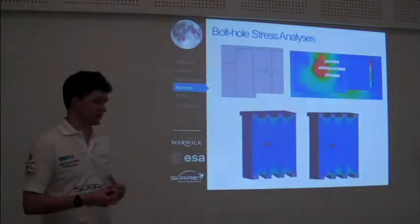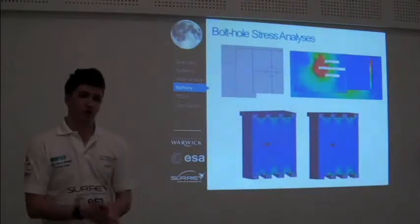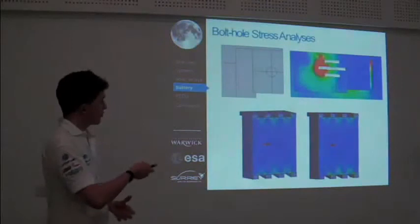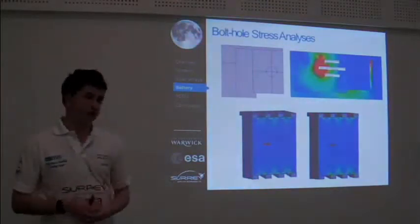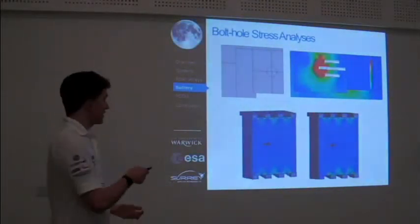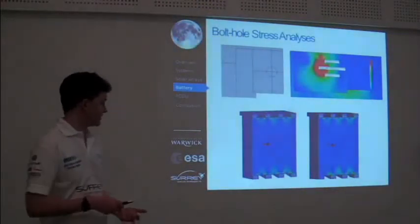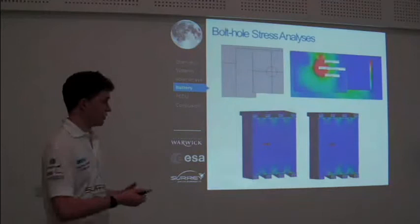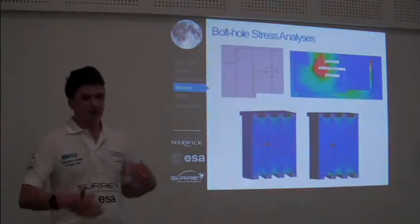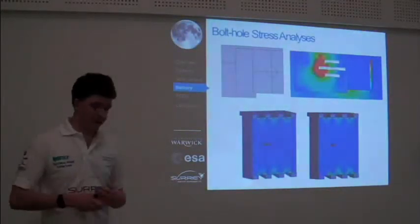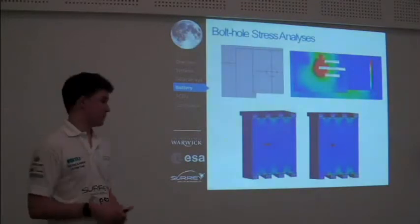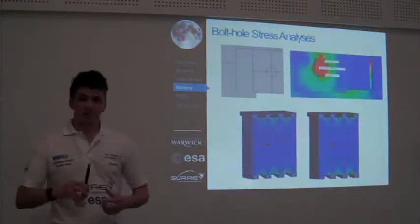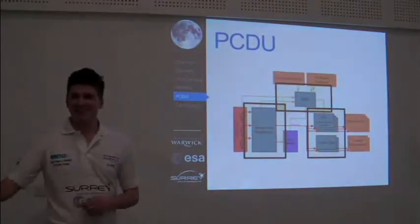The final part of the analysis is concerned with the bolt hole stress calculations. We model the bolt holes using split lines, probe them in the analysis, and average them to find the bolt hole stress across the 8 feet. For the failsafe case, we simulate one bolt failing, remove the constraint, and check whether the other 7 bolts are able to take the redistributed load — the objective being that stress remains below the yield strength of the aluminium. I'd like to pass over to Will, who's going to talk about the PCDU.